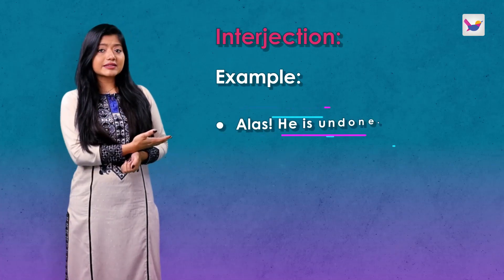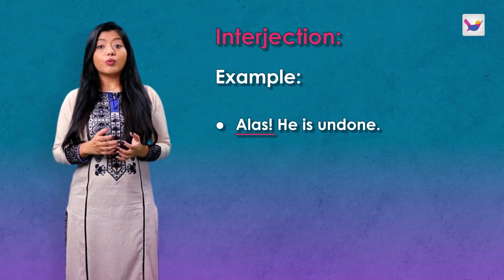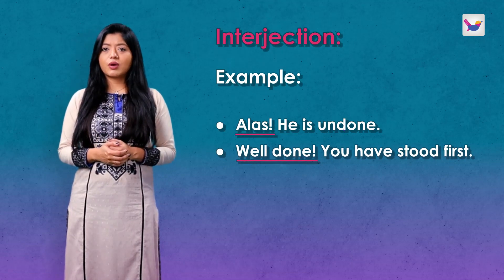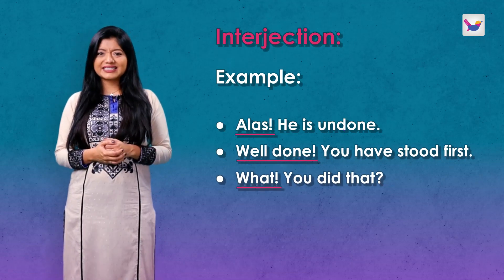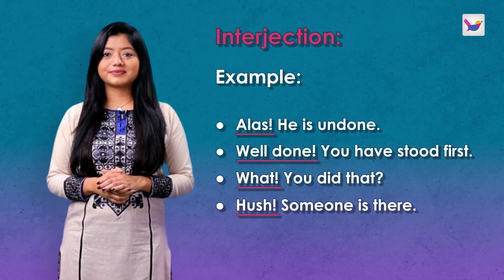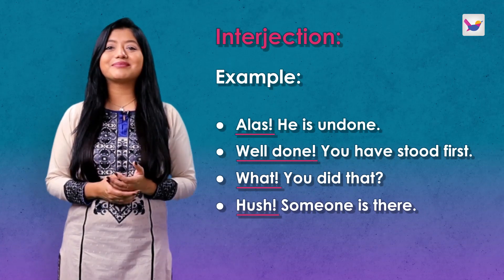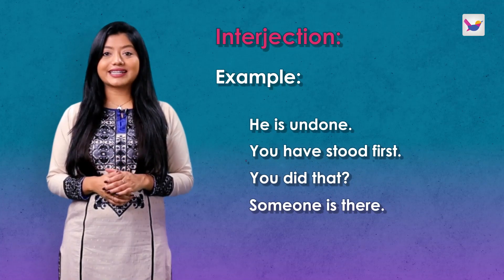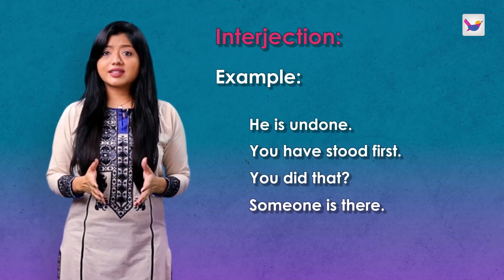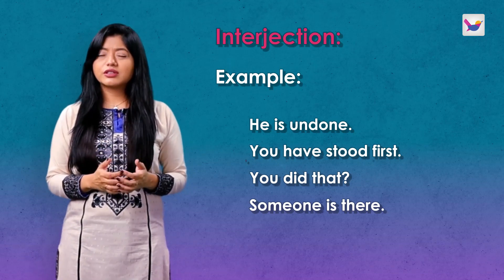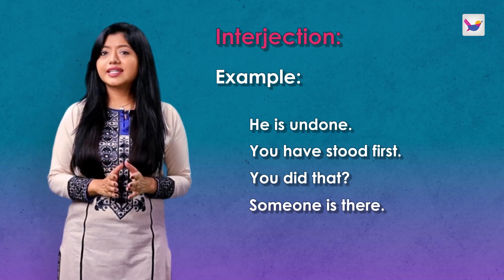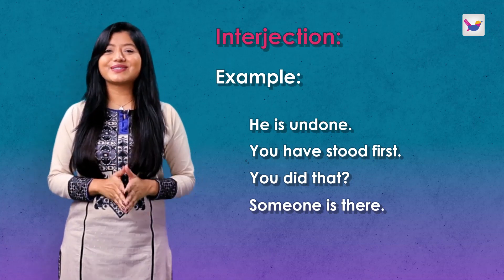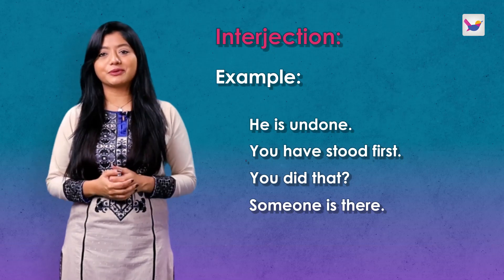Let's look at some examples. Alas! He is undone. Well done! You have stood first. What? You did that? Hush! Someone is there. Even without these interjection words — 'He is undone,' 'You have stood first,' 'You did that,' 'Someone is there' — the sentences are still complete and meaningful.